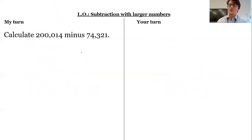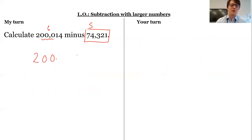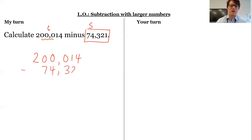Now, just to finish off, we've got two problems here. One is that this is a five-digit number whereas this is a six-digit number. And the other problem is I've got all these zeros — all these placeholders in here that might be causing a problem. So let's take 200,014 subtract 74,321.